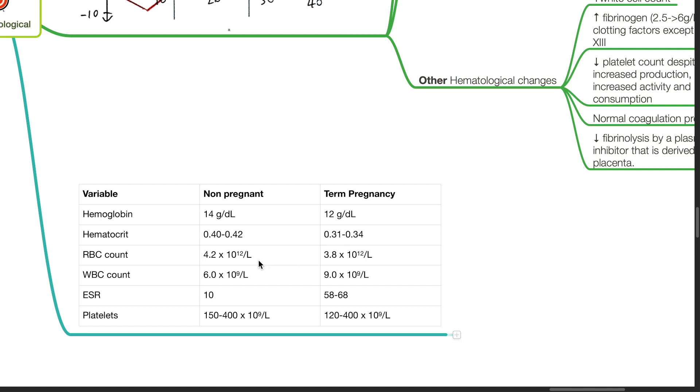RBC count changes from 4.2 to 3.8 times 10 to the power of 12 per liter. WBC count changes from 6 to 9 times 10 to the power of 9 per liter. ESR increases from 10 to 58. Platelet count changes from 150 to 400 to 120 to 400 times 10 to the power of 9 per liter.